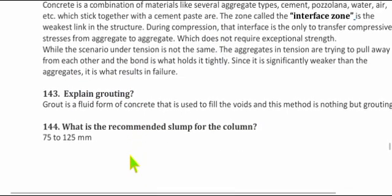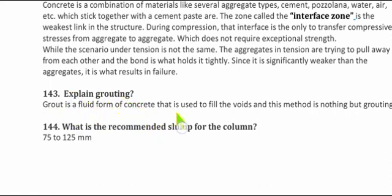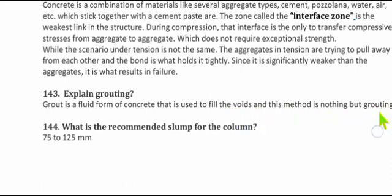Question 143: Explain grouting. Grout is a fluid form of concrete used to fill voids, and this method is known as grouting. Question 144: What is the recommended slump for a column? The recommended slump for a column is 75 mm to 125 mm.